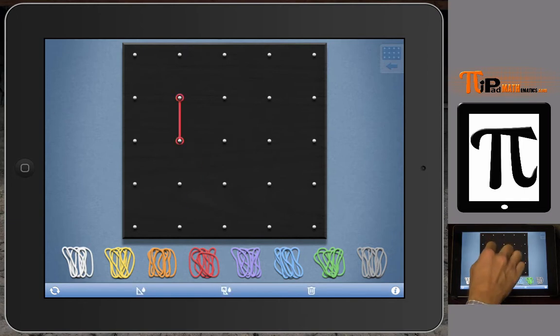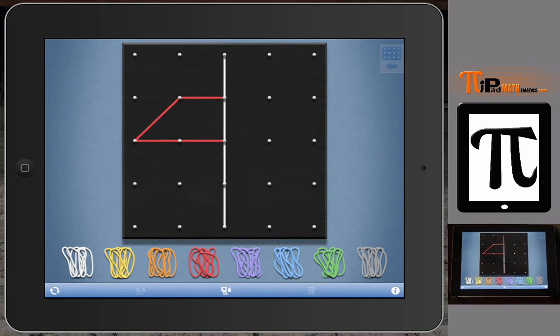One thing we can do is create any kind of figure. Have students create any figure they would like. Here's a figure, and we can create a line of symmetry with our app. Here's our white line, and we want to reflect the red piece about that white line to create a figure that has a line of symmetry.